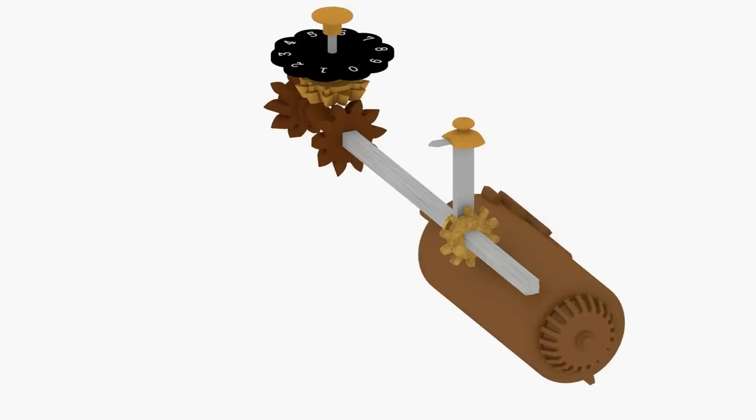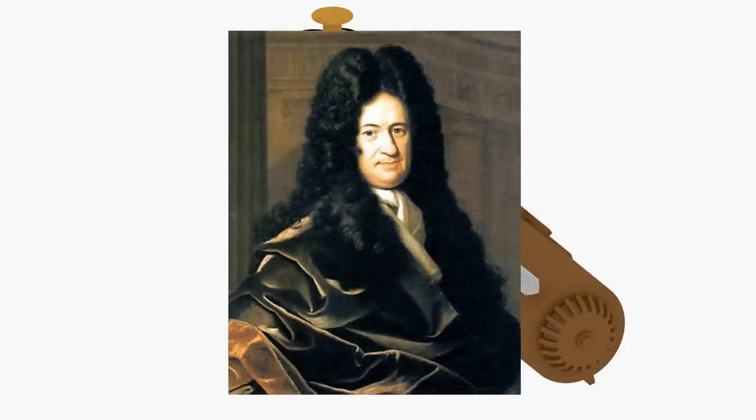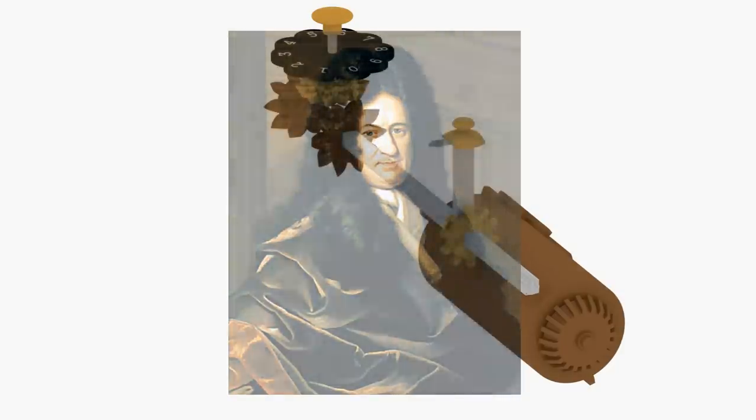The cog cylinder is often called a Leibniz wheel in honor of the mathematician Gottfried Leibniz, who invented it in the late 1600s.